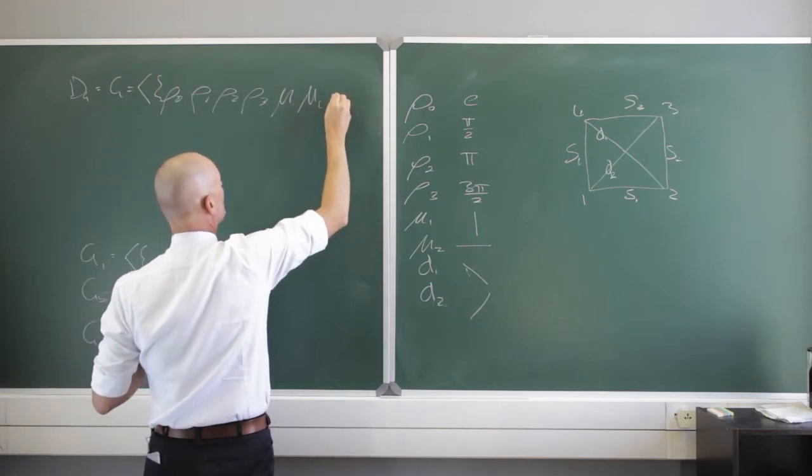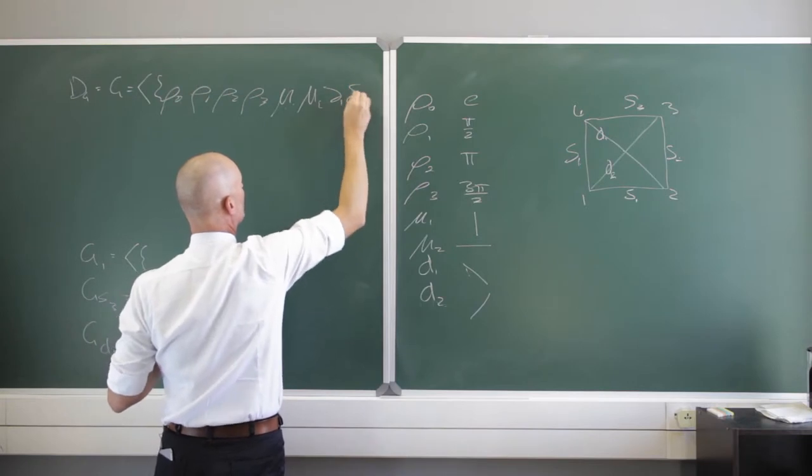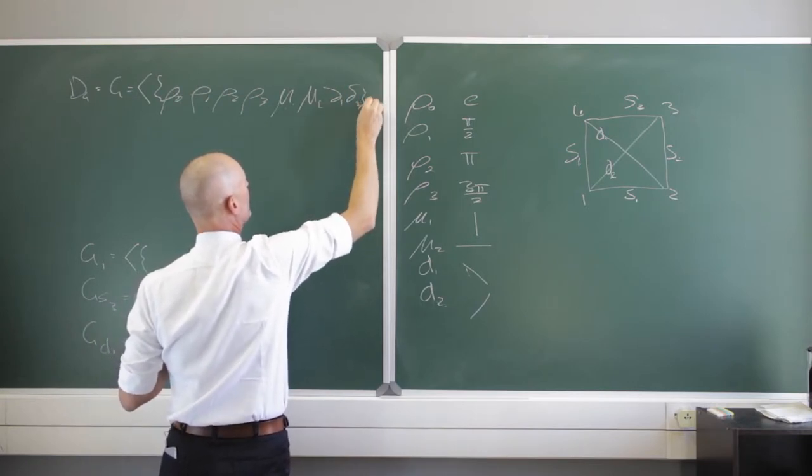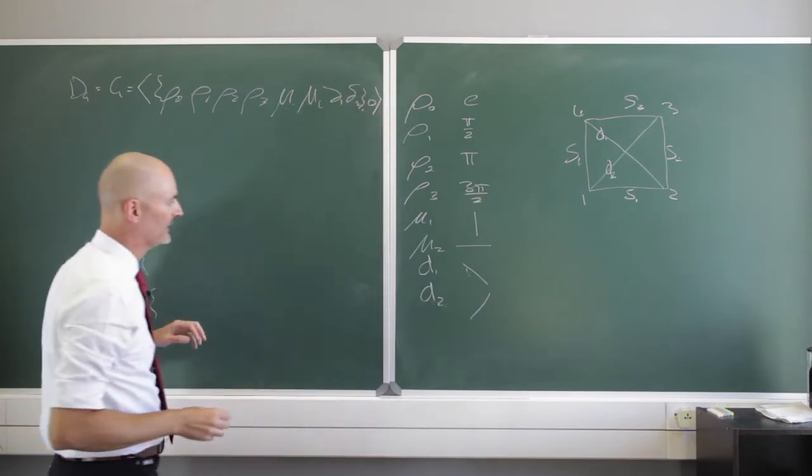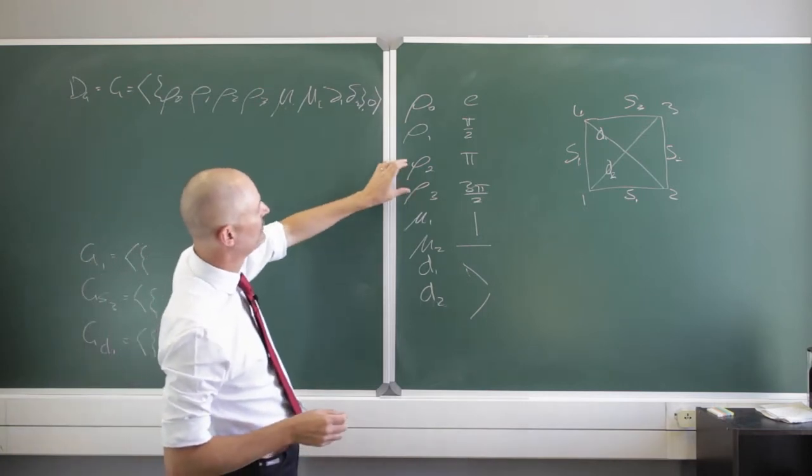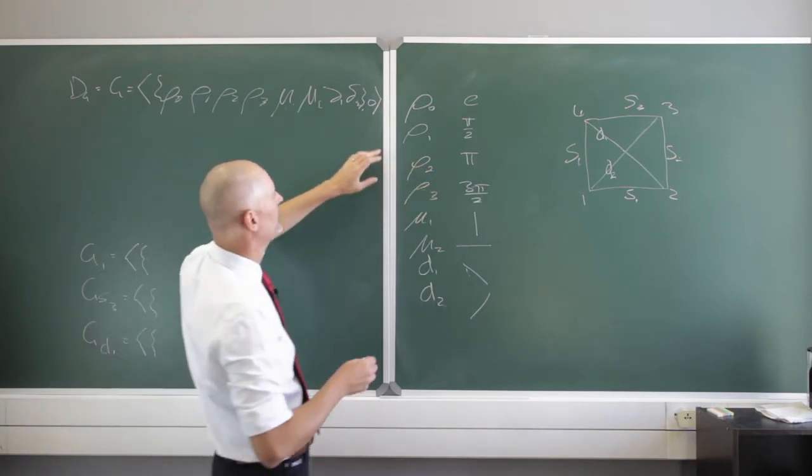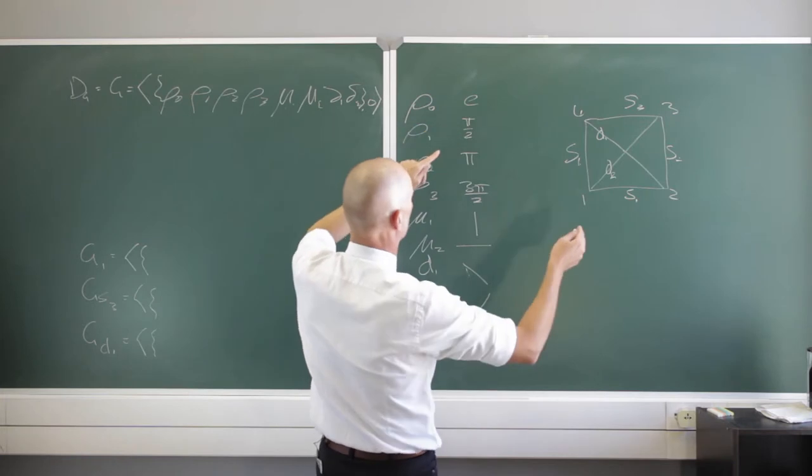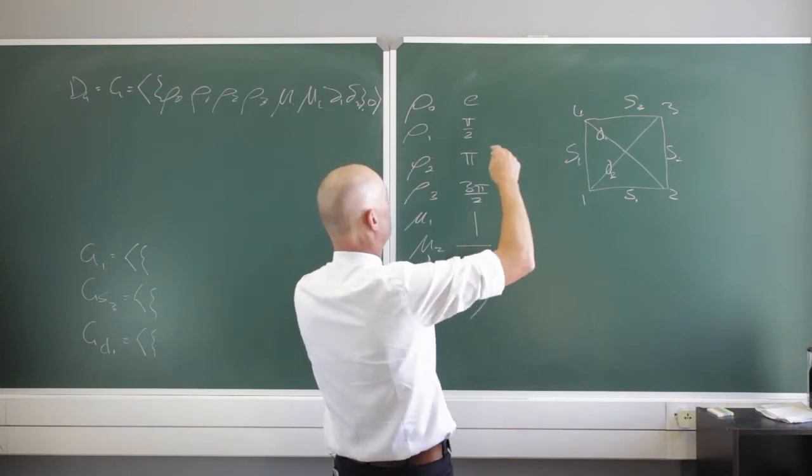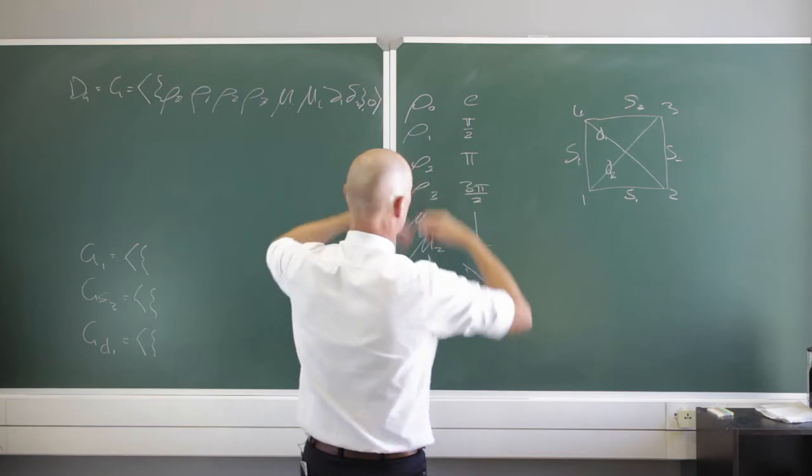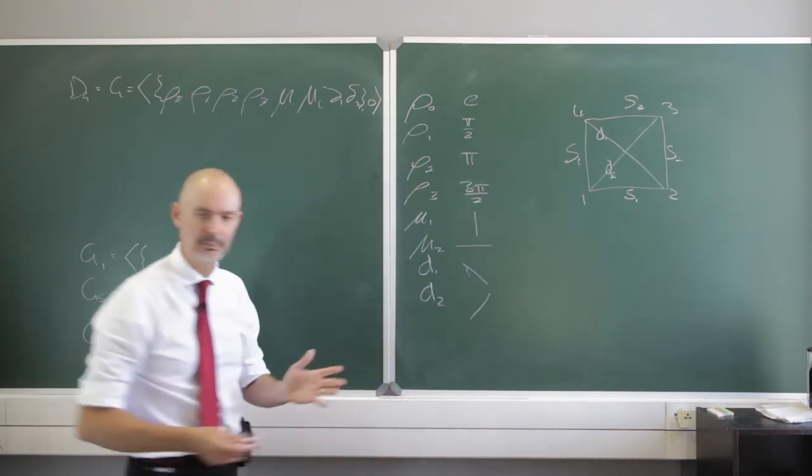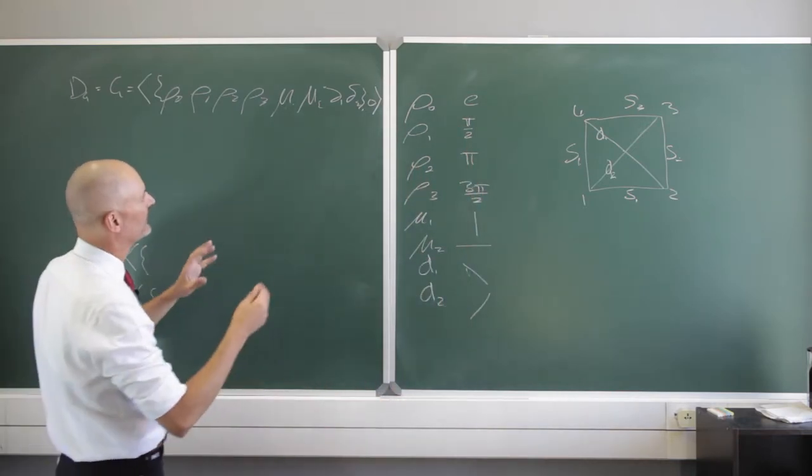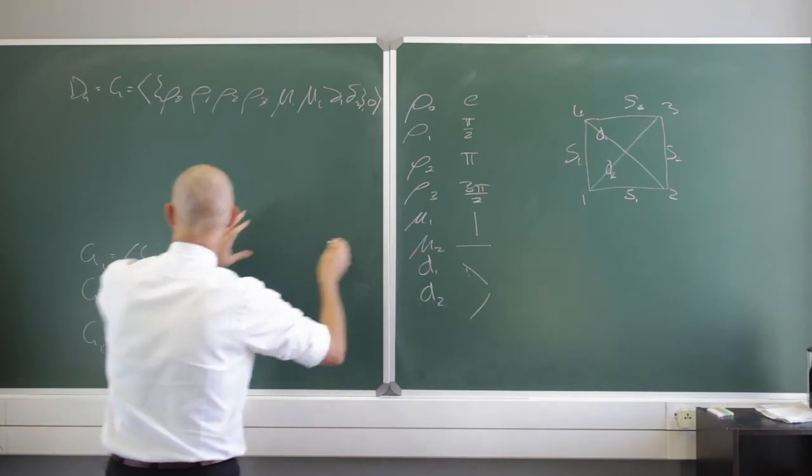And I have my binary operation is that I have this composition of two of these, so first I rotate clockwise 90 degrees and then I flip around that axis. I'm not going to prove for you with a Cayley table that this is a group. Let's just take for granted that it is a group.